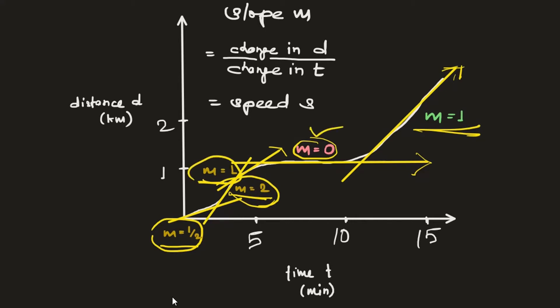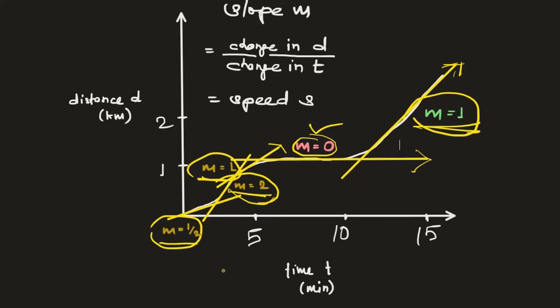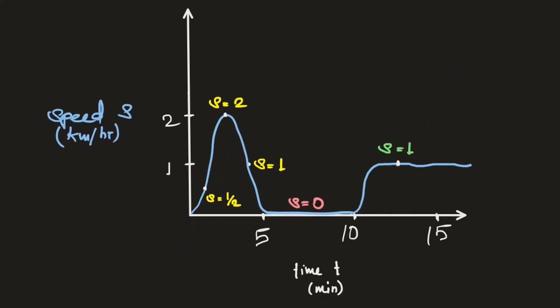Then we had no speed at all, and then we ended up with a constant speed of 1 km/min. If we try to plot all these values on a different graph, it would look something like this — this time we have a graph of speed against time, not distance against time. Initially it was 0.5 km/hr, then peaked at 2 km/min.